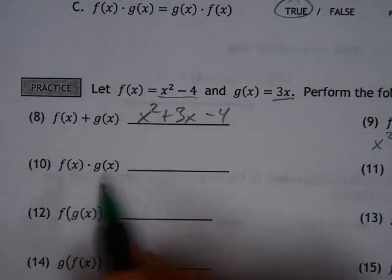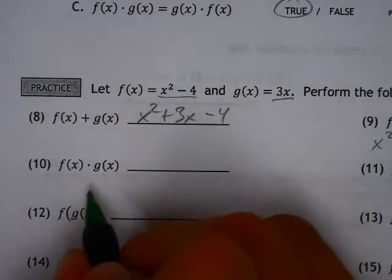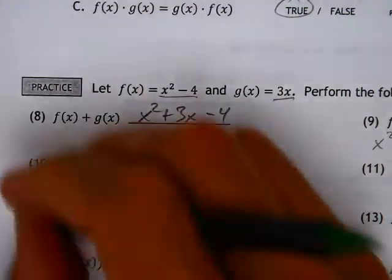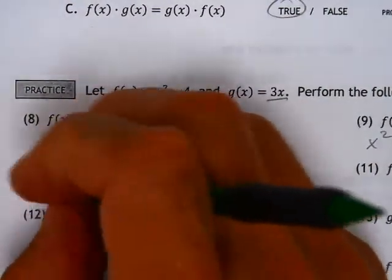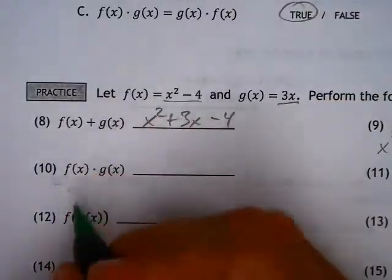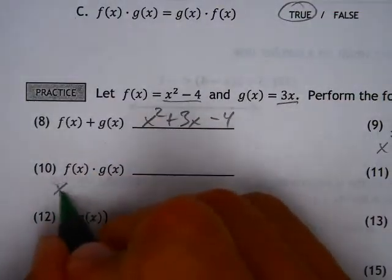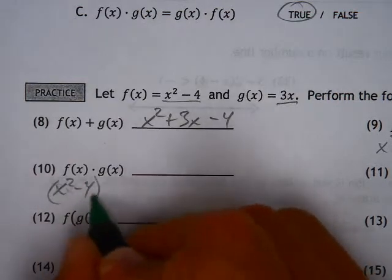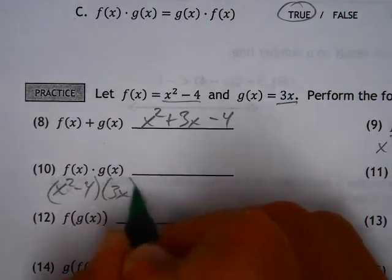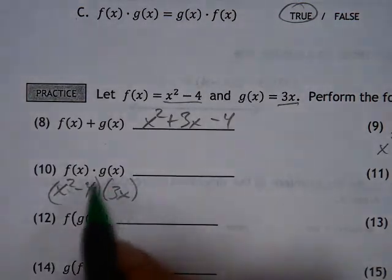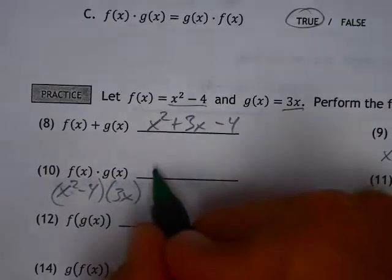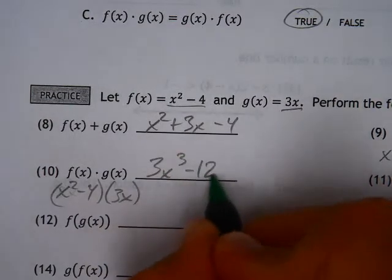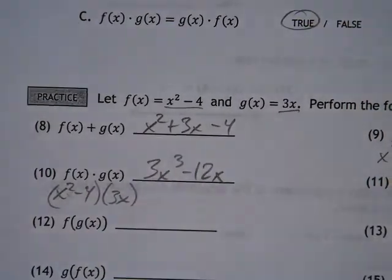When you're multiplying, you're just multiplying. 3x — I'll stave off any confusion here — x squared minus 4, and then g of x is 3x. So I'm distributing the 3x to both items: 3x to the third power minus 12x.